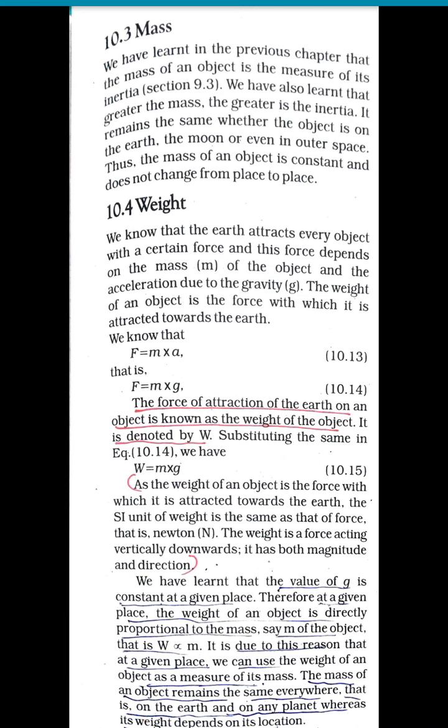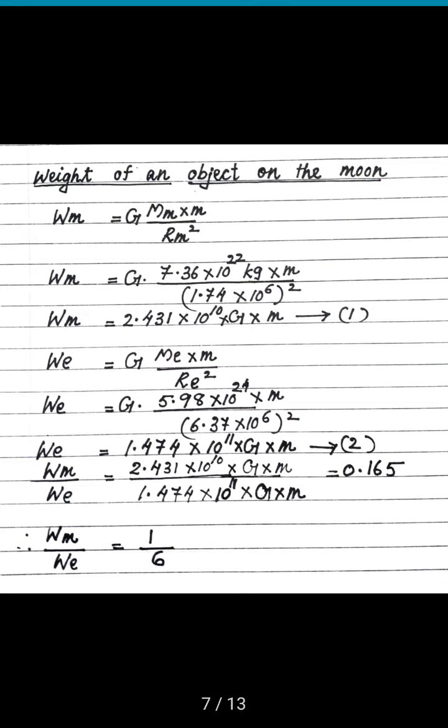Now we can see the weight of an object on the moon and its relation to the weight on earth. The weight of an object on earth is the force with which the earth attracts the object. Similarly, the weight of an object on the moon is the force with which the moon attracts that object. The mass of the moon is less than that of the earth, so the moon exerts a smaller force of attraction on objects.